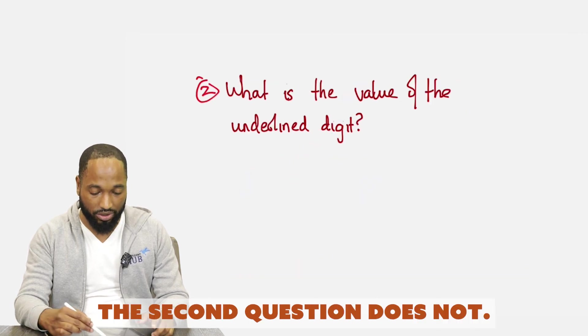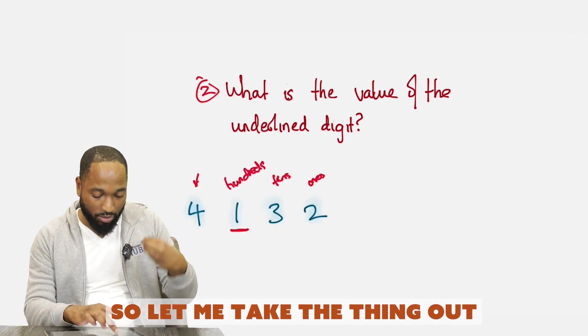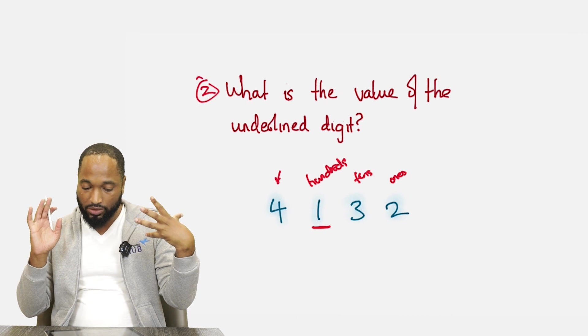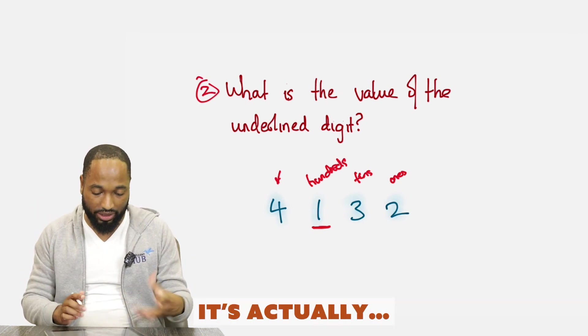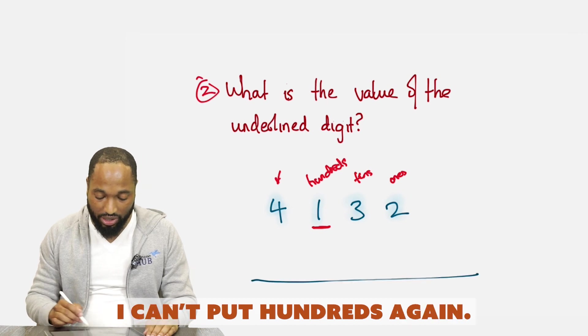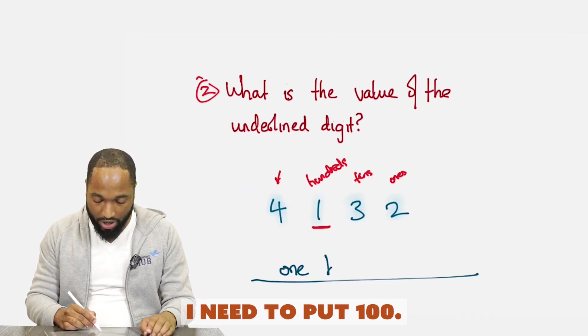What's the first question? This is the first question, and this is the second question. What's different? First question has this word place in it. The second question does not. What is the value of the underlying digit? So let me take the thing back out of my back pocket now and put it here. Pow! So what's the value of that underlying digit? It's actually, I can't put hundreds again. Last time I just put hundreds. I need to put one hundred.